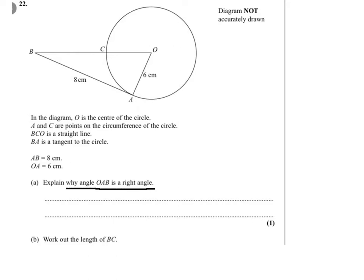We know that BA is a tangent to the circle, and the tangents meet a circle at 90 degrees, or you can say tangent meets the radius of a circle at 90 degrees. Tangent meets a circle at 90 degrees.